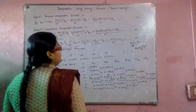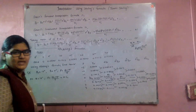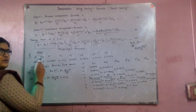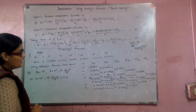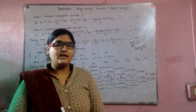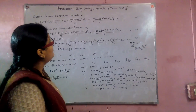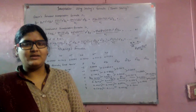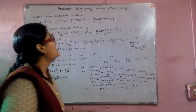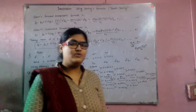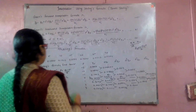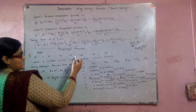Now let us take an example to see how Stirling's formula is applied. We are given values of θ (angle) and tan θ, and we have to find the value of tan(16°). A key question is: what is the significance of using Stirling's formula versus Newton's forward or backward formula? The answer is that Stirling's formula and Bessel's formula are applied for finding midterm values — here, 16° is a midterm.